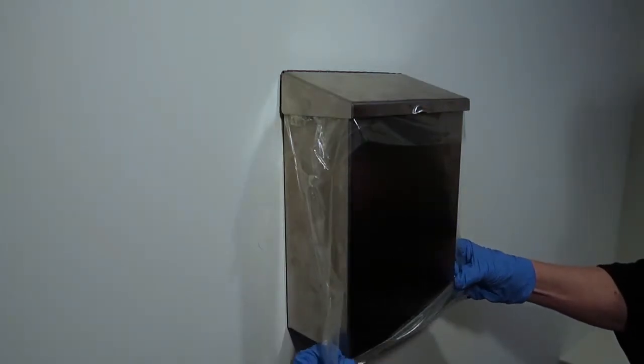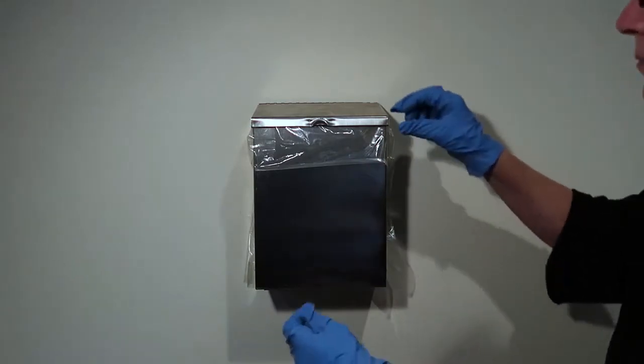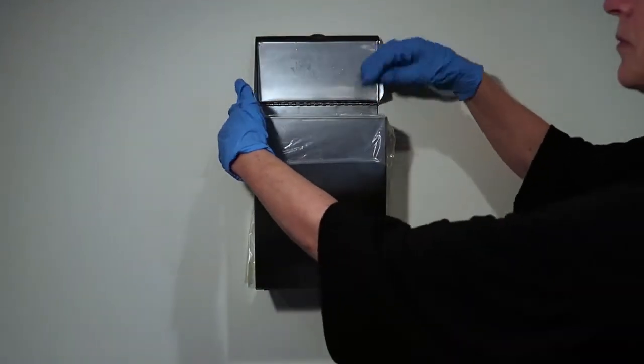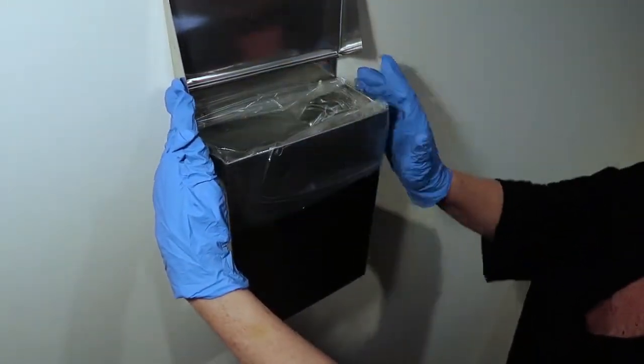Step 3. Pull gently on the hanging strap to fit around snugly on the bottom of the receptacle. Open the lid, adjust the bag as needed to ensure proper fit.